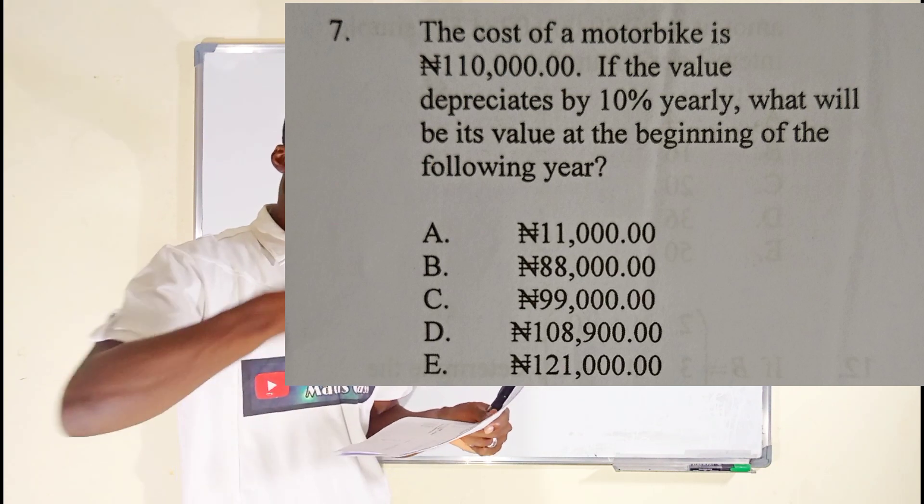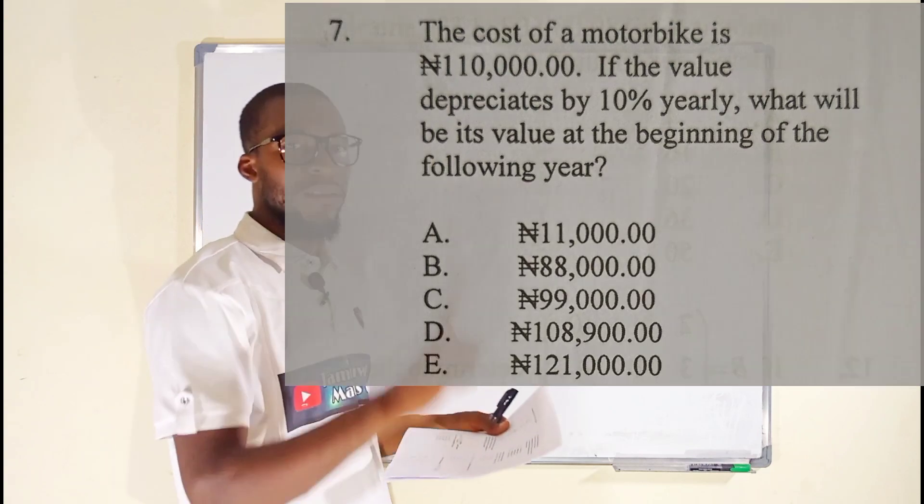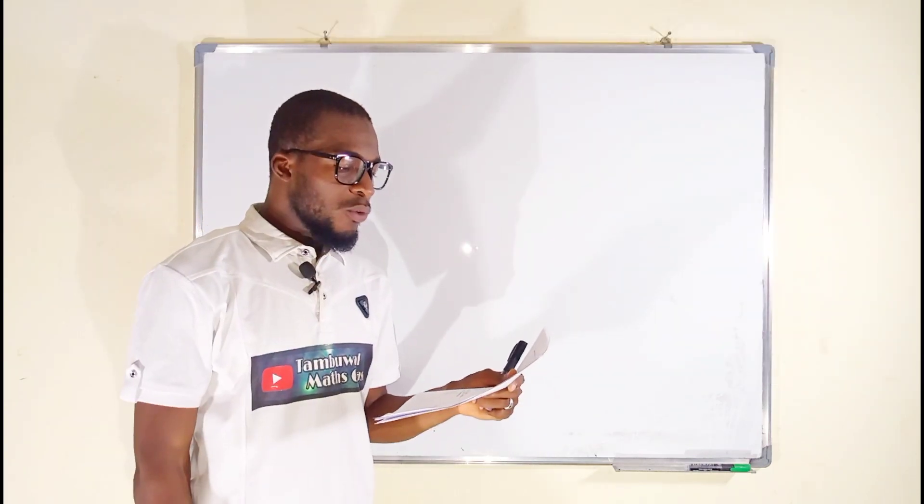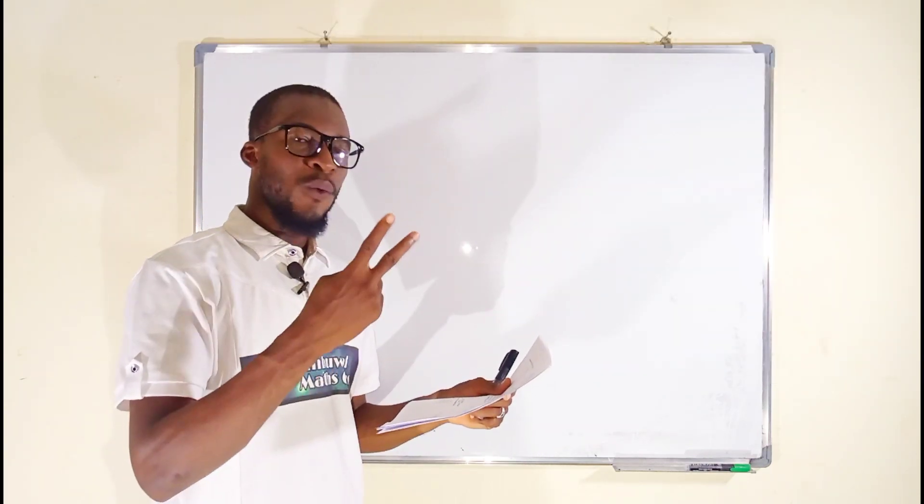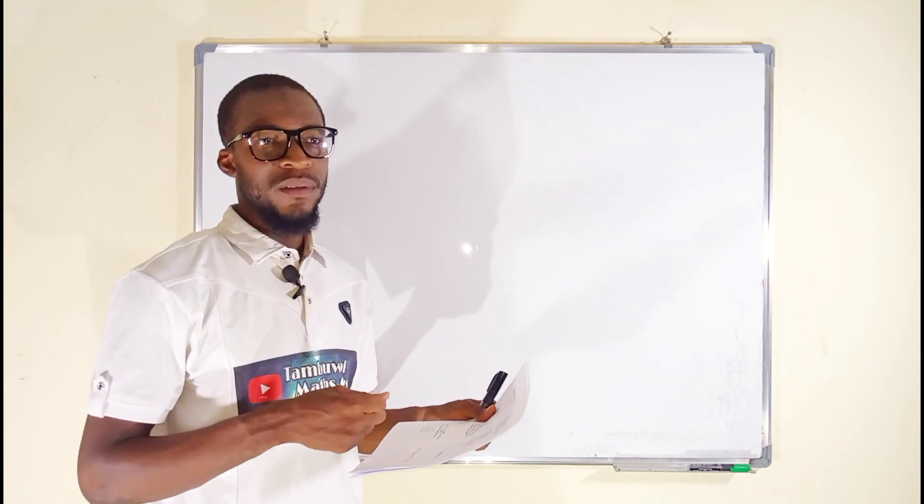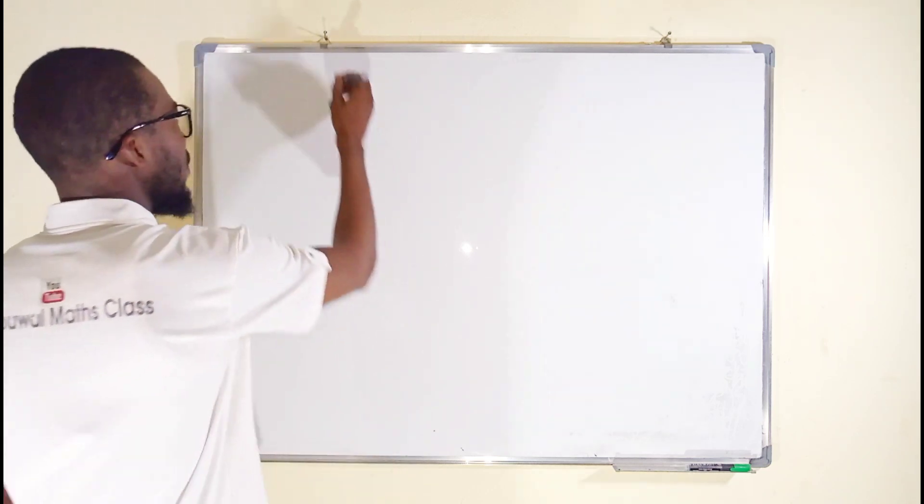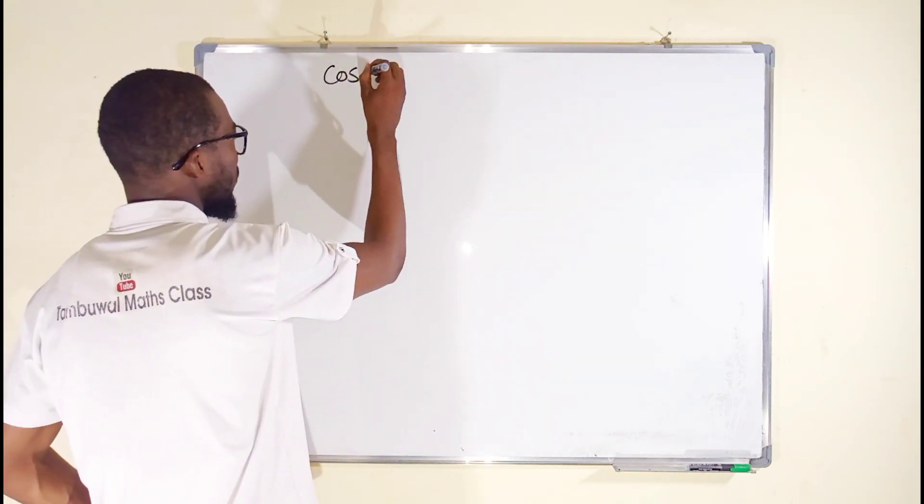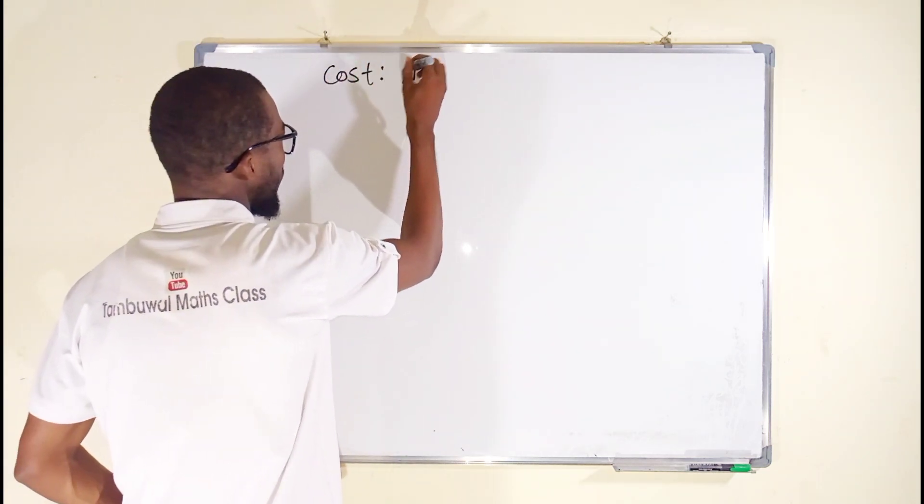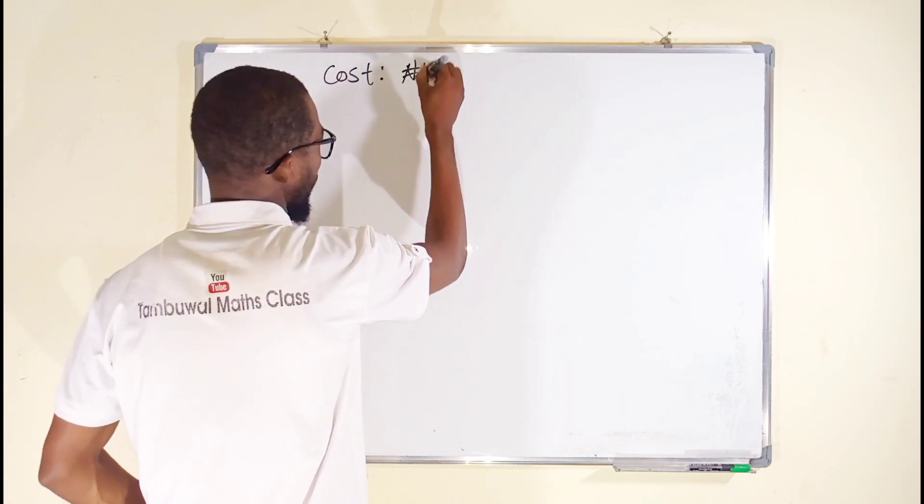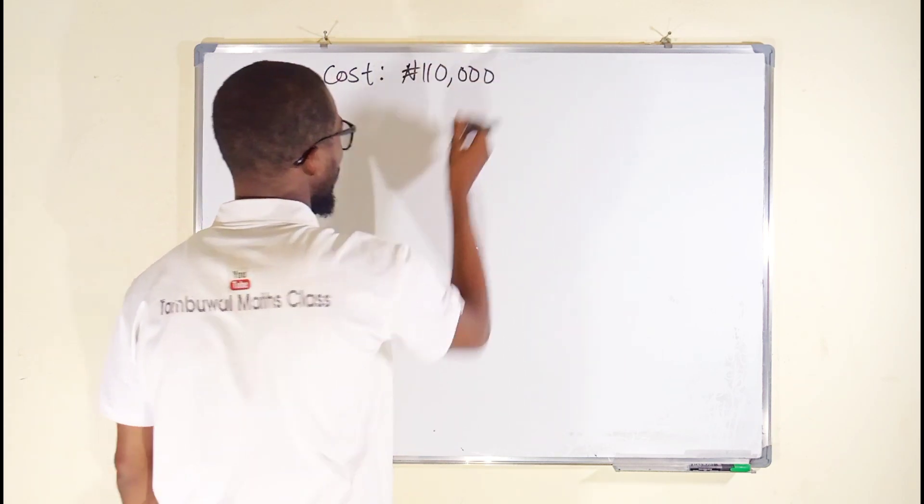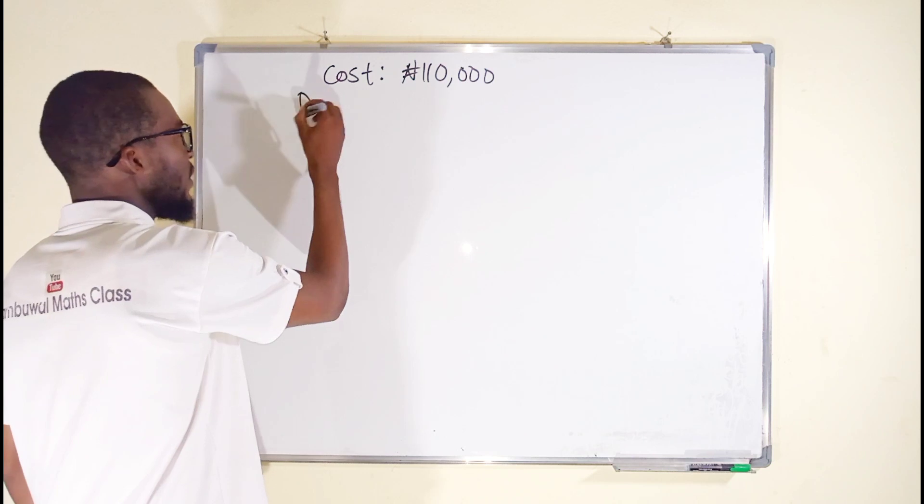So we are asked to find the cost of this motorbike in the following year, that is next year. Now let me use two different ways to solve this same problem, starting with the traditional way. Let us write our data. Let's start with the cost.